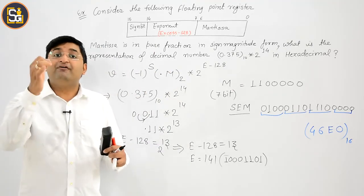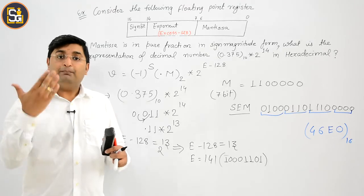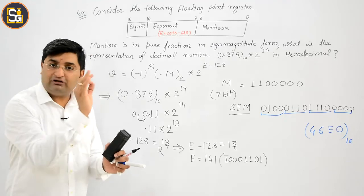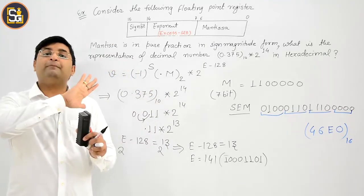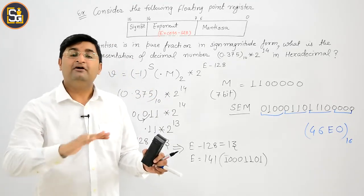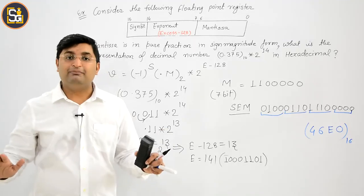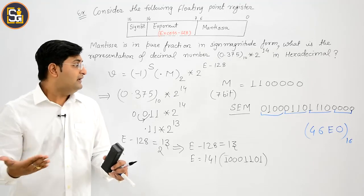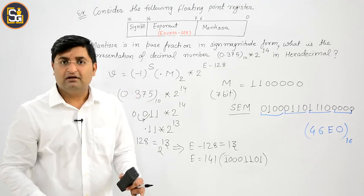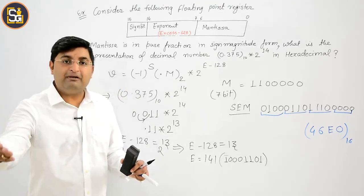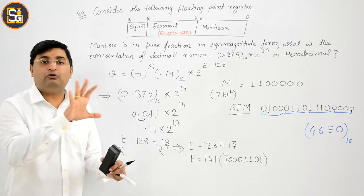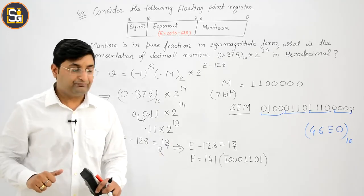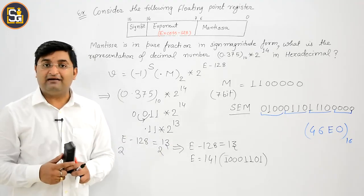जितने भी हमने variety सीखी है previous questions में, अब यह सारी की सारी variety छोटे छोटे way में. क्योंकि हमने अभी तक जितने questions किये हैं, उसमें सारी varieties हमने पढ़ लिये. अब हम इसको one by one एक एक example में - it is not the gate question. अब आपन gate questions पे भी move on होंगे, लेकिन यह कुछ practice questions हैं, जो आपको करने आने चाहिए. Clear है, is there any doubt?